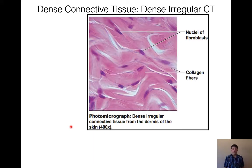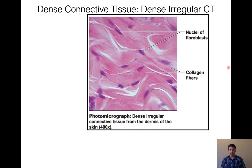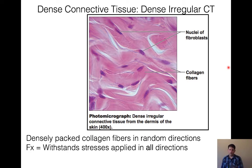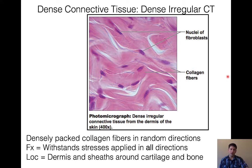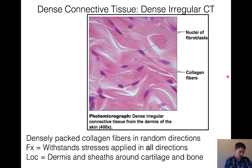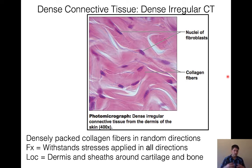Dense irregular connective tissue has fibroblast nuclei and collagen fibers that are chaotic and swirly, running in all different directions. Because they're very random, they help withstand stress in all directions — you could clamp this tissue and pull in every direction and it would withstand that stress. We find this in the dermis, the layer right below the epidermis. The integumentary system is made of the epidermis, dermis, and hypodermis. That dermis is really strong and resists pulling and yanking on your skin. We also find it in sheaths on cartilage and bone.